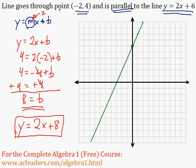And we wanted to find the line that goes through the point negative 2, 4. I'm going to graph that in red. So negative 2, 4 right here.